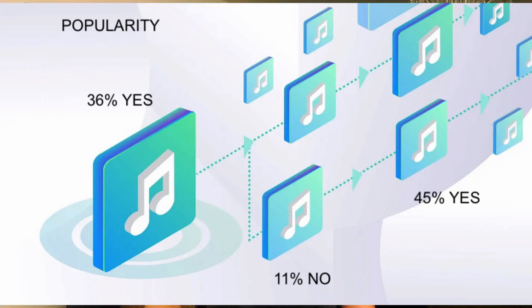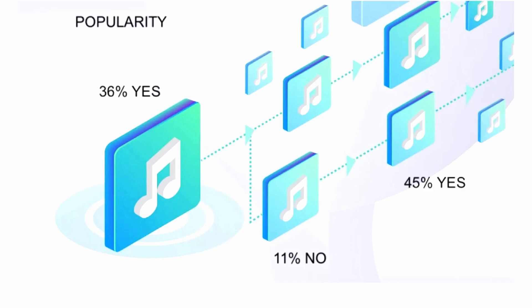Spotify's solution is to consider the so-called popularity index, an internal measure they have defined in order to estimate the popularity of a track. The idea is to promote and recommend only tracks that are already popular enough.